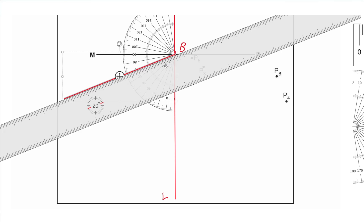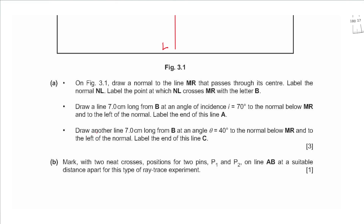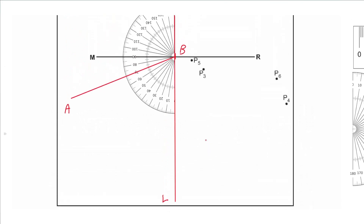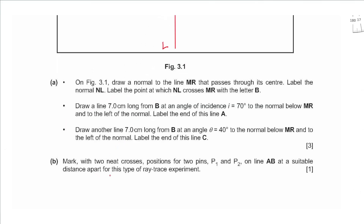After confirming the length of line AB is 7 cm and trimming any excess, we label the endpoint A. Then we draw a second line from B, 7 cm long at 40° to the normal (below MR, to the left), and label its endpoint C.